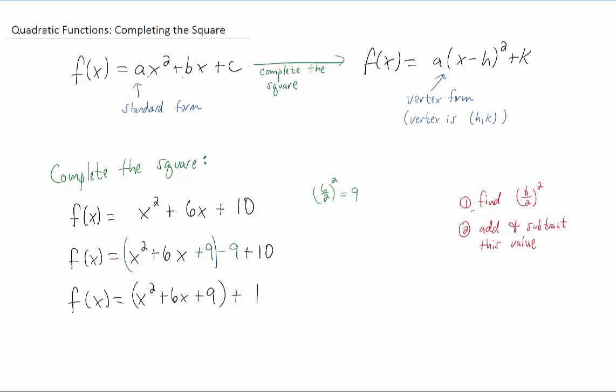Really all we've done so far is we've rewritten x squared plus 6x plus 10 into x squared plus 6x plus 9 plus 1, which of course are the same thing. The key, though, is that these first three terms when we're completing this square are always going to be a perfect square. We can always factor these three terms into a perfect square.